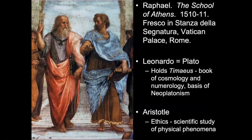Leonardo as Plato holds the Timaeus — a book of cosmology and numerology that's the basis of Neoplatonism — and points upwards toward the heavens. On the other side, Aristotle holds a book called Ethics, which is more about Aristotle's scientific study of physical phenomena. During the Renaissance, people were moving away from some of Aristotle's ideas trying to be more scientific, but he's still seen as the first physical scientist.